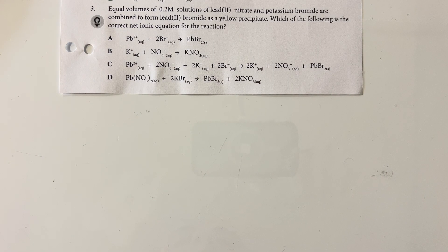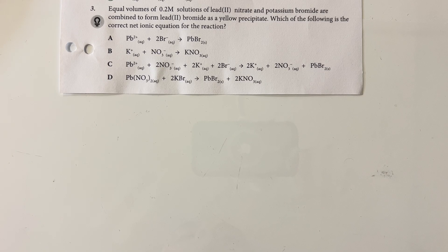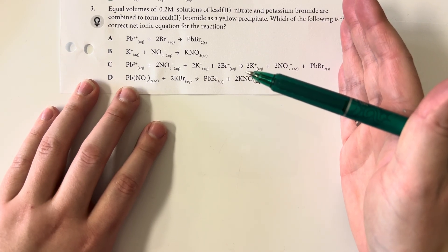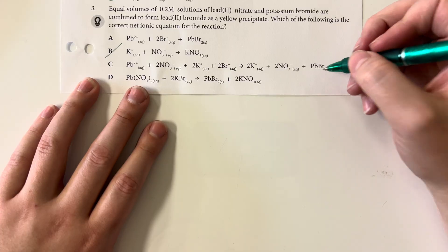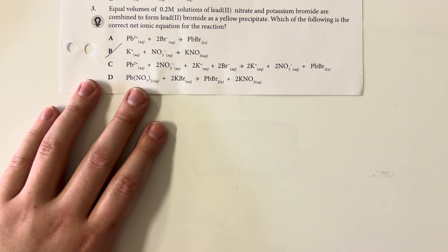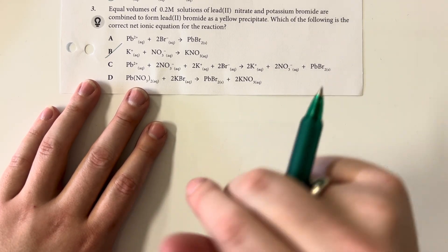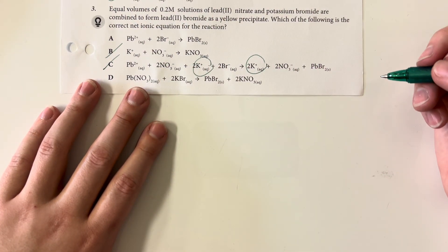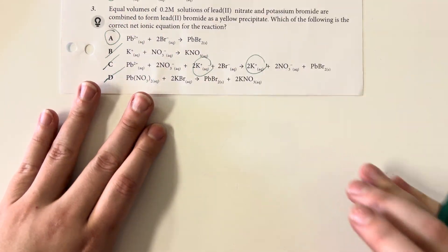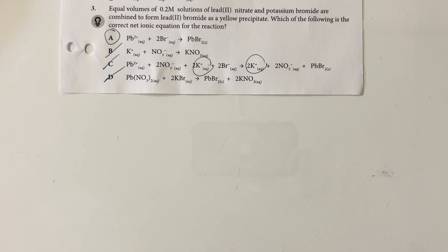Equal volumes of a 0.2 molar solution of lead(II) nitrate and potassium bromide are combined to form lead(II) bromide as a yellow precipitate. Which of the following is the correct net ionic equation? Lead(II) bromide must appear on the product side, so any option without it is eliminated. A net ionic equation should not include extra ions that appear on both sides — potassium remains the same on both sides in one option, so that's eliminated. Option A is the only choice with ions on one side and the precipitate on the other.